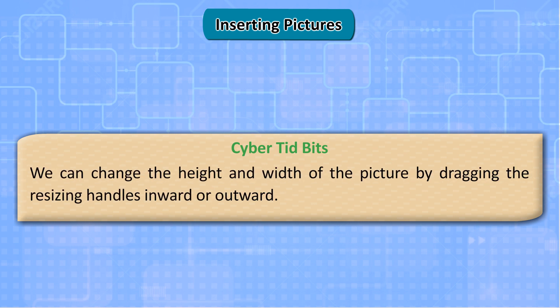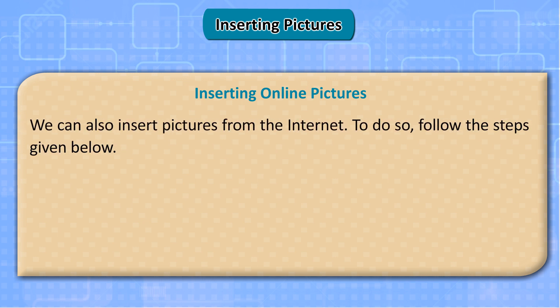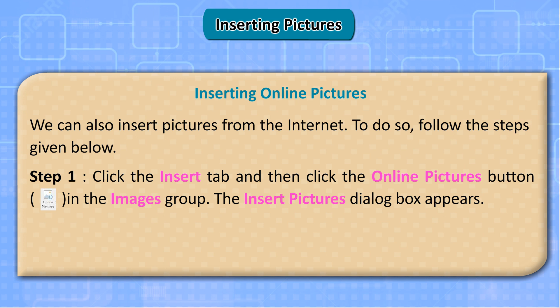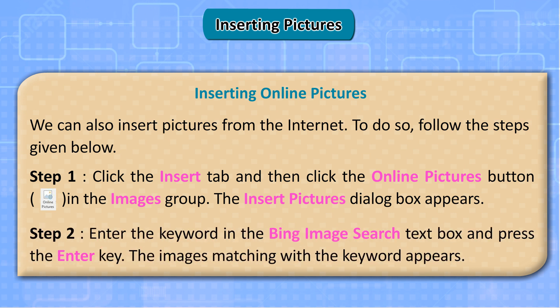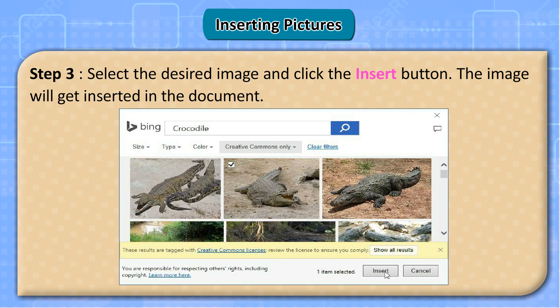We can change the height and width of the picture by dragging the resizing handles inward or outward. Insert Online Pictures. We can also insert pictures from the internet. To do so, follow the steps given below. Step 1: Click the Insert tab and then click the Online Pictures button in the Images group. The Insert Pictures dialog box appears. Step 2: Enter the keyword in the Bing Image Search text box and press the Enter key. The images matching the keyword appear. Step 3: Select the desired image and click the Insert button. The image will get inserted in the document.